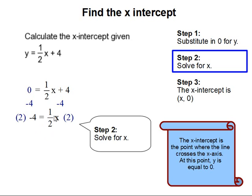Then to get rid of the 1 half, we are going to multiply 2 on both sides of the equal sign. x is then equal to negative 8.